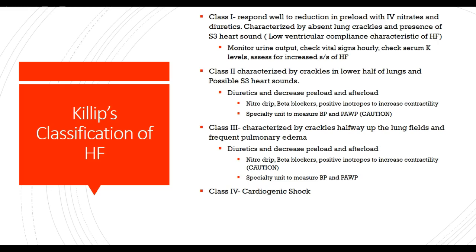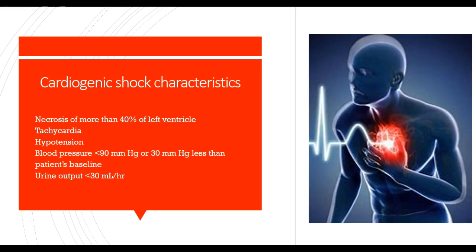Class IV is cardiogenic shock. Classic characteristics include necrosis of more than 40% of the left ventricle, tachycardia, hypotension — blood pressure less than 90 mmHg or 30 mmHg less than the patient's baseline — and urine output decreased to less than 30 mL per hour or 0.5 to 1 mL per kilogram per hour. Signs include cold, clammy skin due to decreased peripheral circulation, poor peripheral pulses — the body shunting blood to central organs — agitation, restlessness and confusion, tachypnea, continuing chest discomfort, decreased urine output, and pulmonary congestion. Early detection is essential because undiagnosed cardiogenic shock has a high mortality rate.